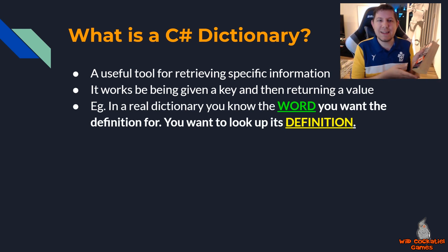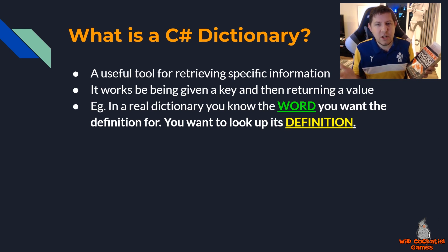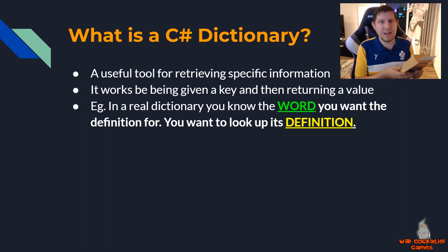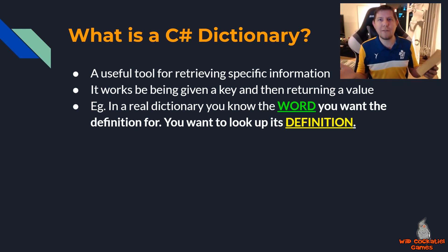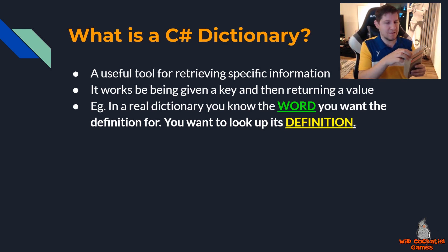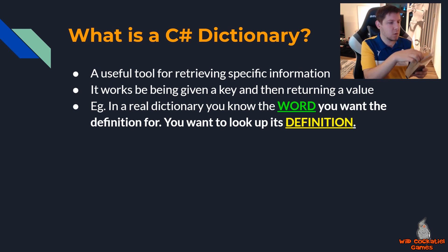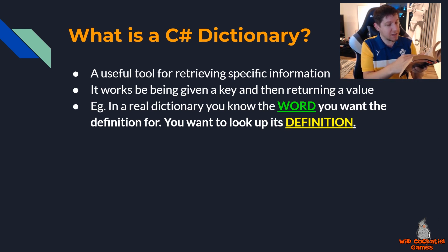In a real dictionary, you know the word you want the definition for and you look up its definition. For example, say I'm playing Scrabble and I make the word 'quaff' for a ton of points on the triple word score and my opponent says 'you're a cheater, what the hell is quaff?' Well, I know I want the definition for quaff. Because I know the word, I can go to this page - bookmarked it - and find out that quaff means to drink heartily or in one draught.